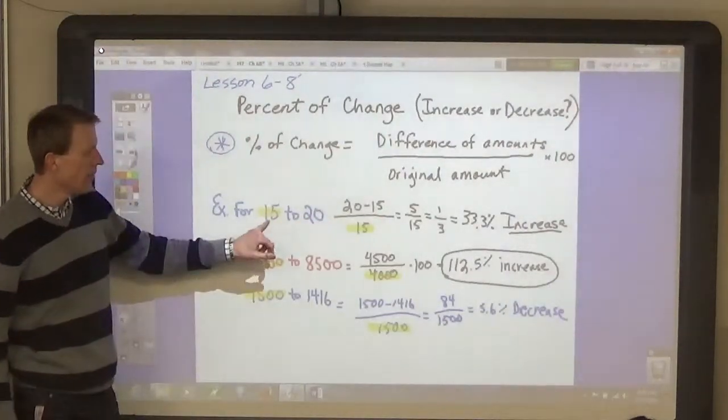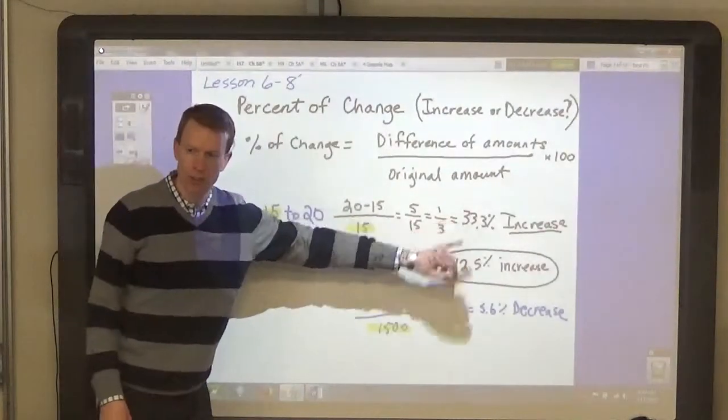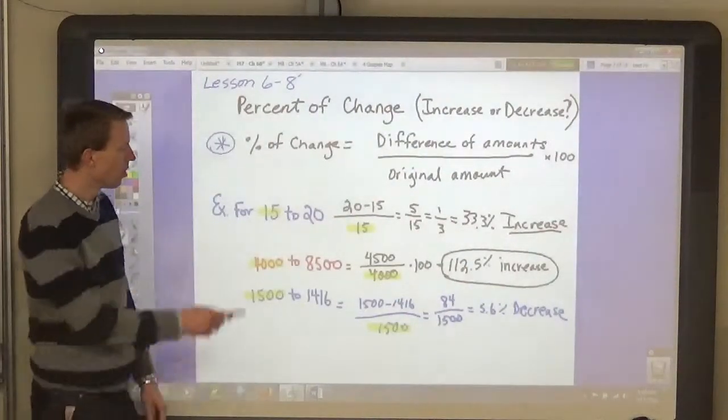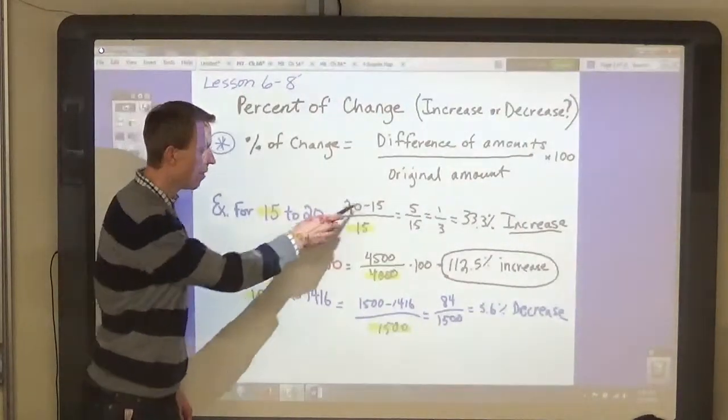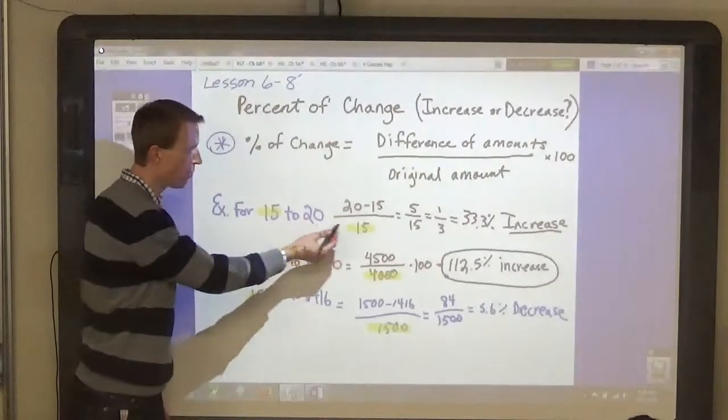And then simply divide it by the original amount and convert it to a percent. So, 20—let's go back—20 minus 15 is 5. The original amount is 15.